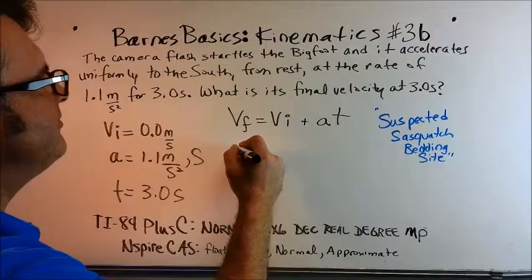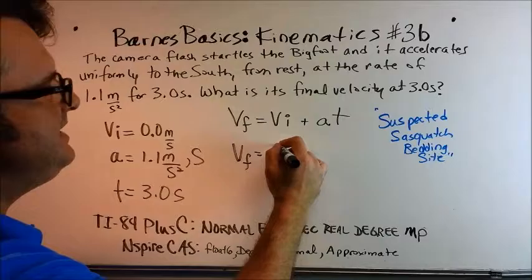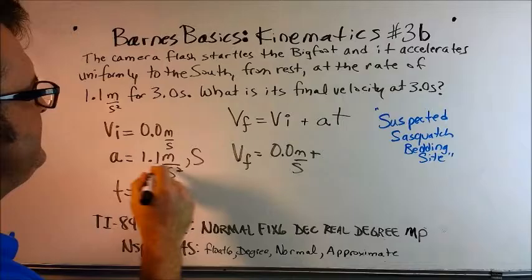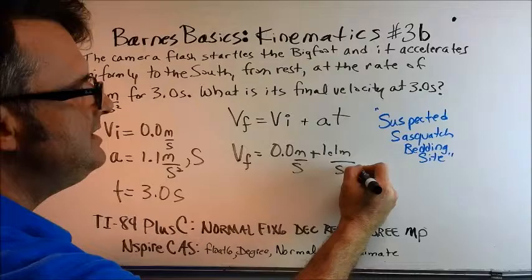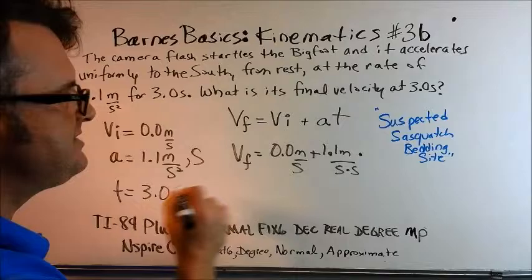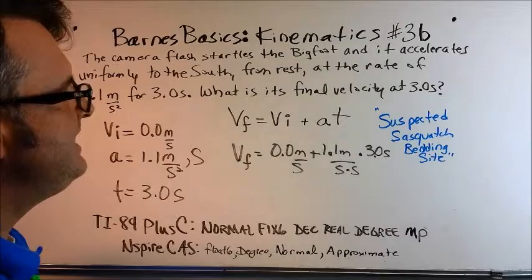So here we go. Let's see what we can figure out. If we are solving for final velocity right here, the initial velocity is 0.0 meters per second. And we are to add this to 1.1 meter per second squared. And then we are to multiply this by 3.0 seconds.